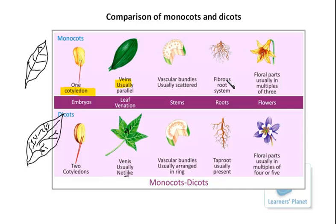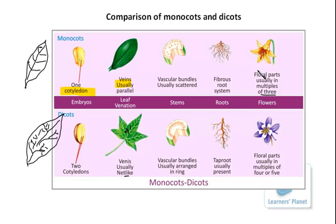Regarding roots, fibrous roots are present in monocots while dicots have a taproot system with one prominent root. Regarding floral parts, in monocots the petals are present in multiples of three, whereas in dicots they are arranged in multiples of four or five. By looking at these features — cotyledons, venation, root system, vascular bundles, and floral parts — you can identify whether a given plant is monocot or dicot.